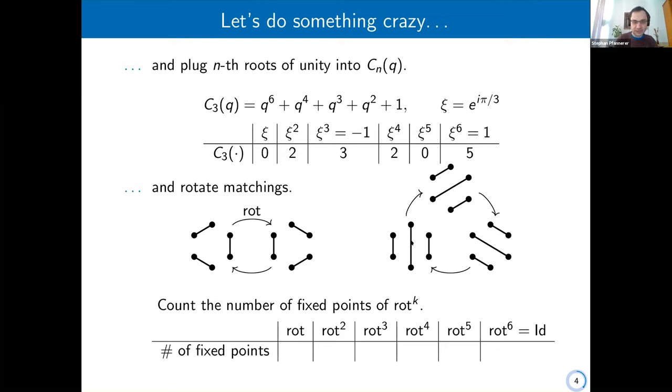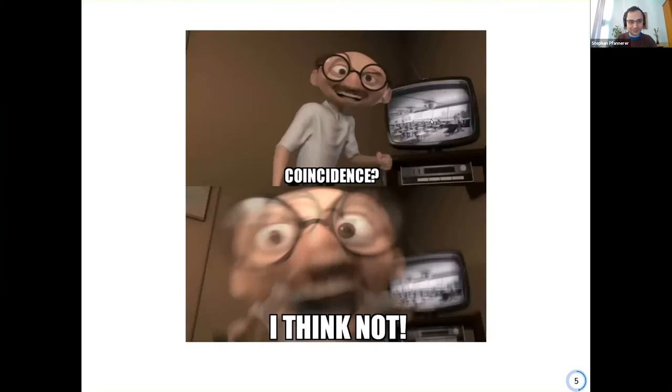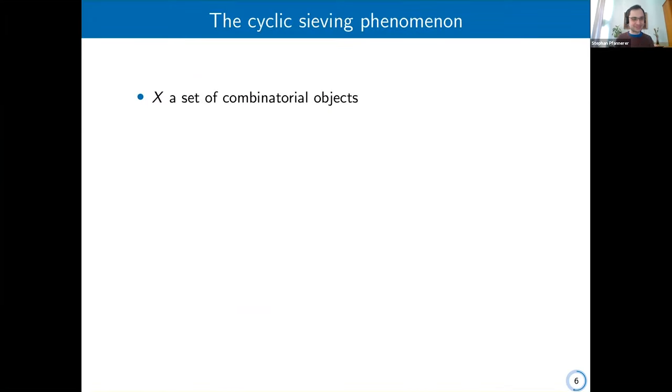Now let's count the number of fixed points of rotation. Rotating only once gives us no fixed points because each element is mapped to something different. Rotating twice, this matching is mapped to itself, and also this matching is mapped to itself. But here in this orbit, we don't have any fixed points. Rotating three times, all elements in the right orbit are fixed points but none in the left. Rotating six times is the same as rotating not at all, so all elements are fixed points. We can see these numbers match up.